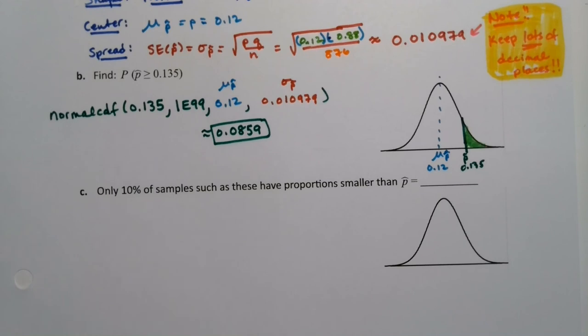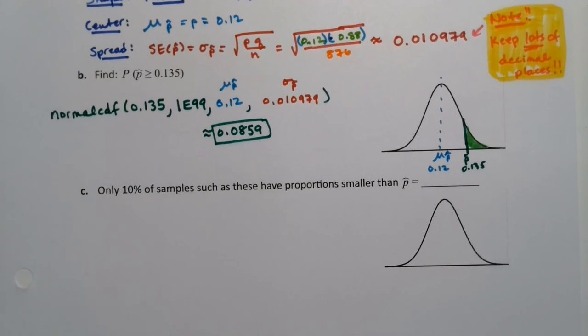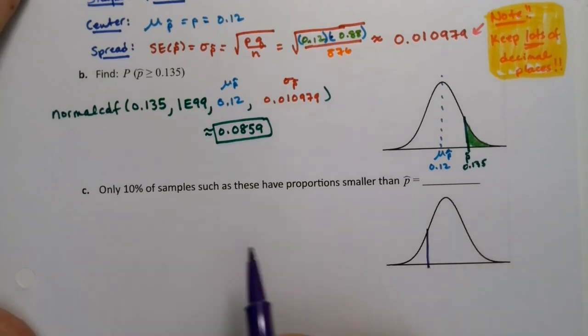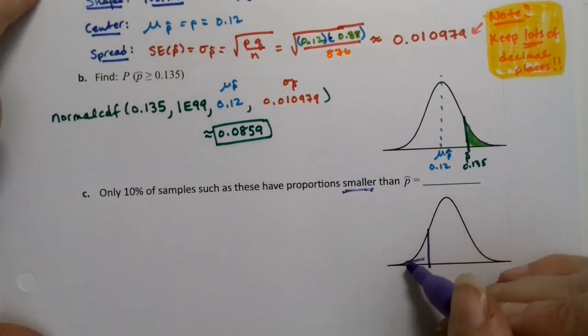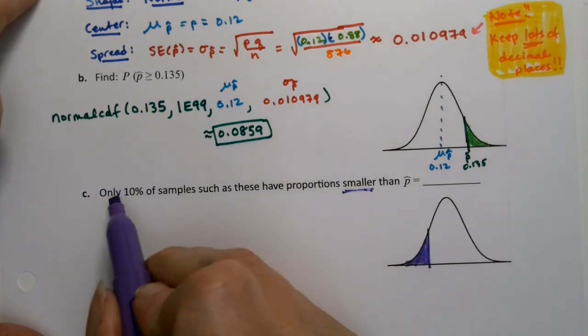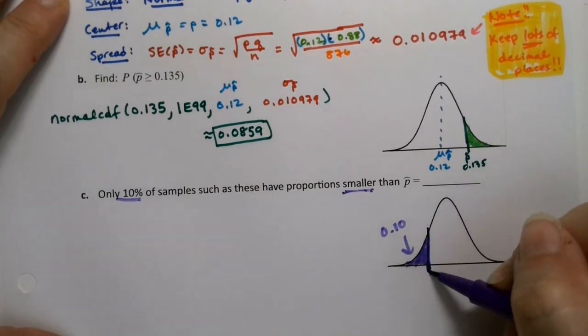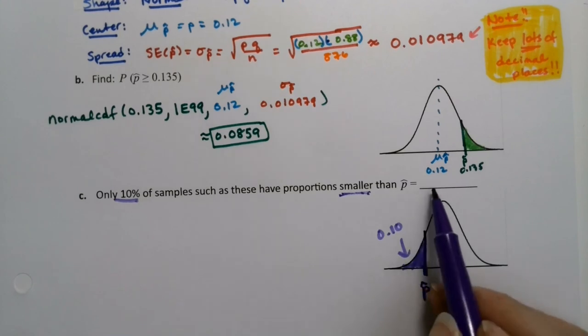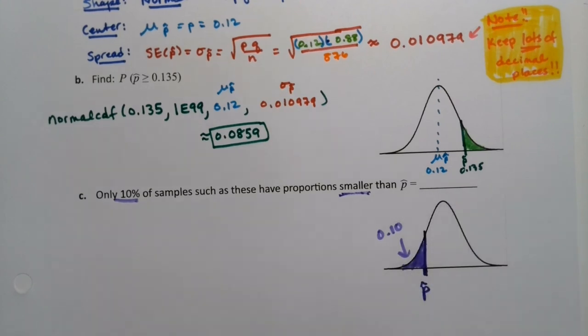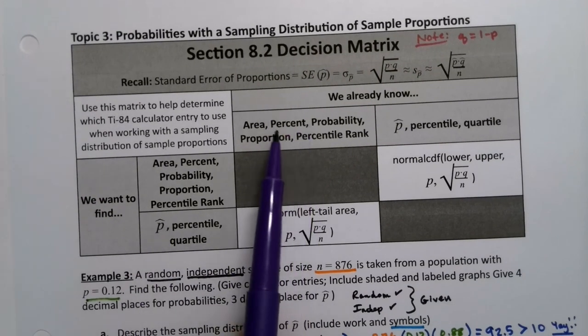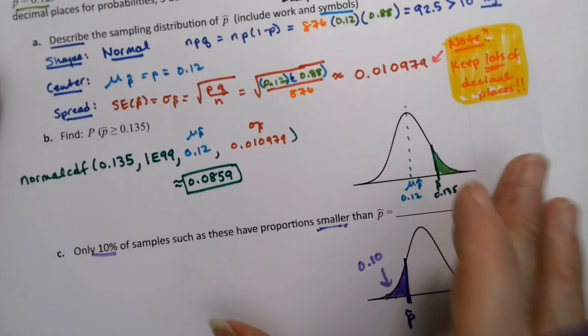Now, 10% of samples would have proportions or samples such as these would have proportions smaller than p-hat equals what? Okay, 10%. So what we're looking for is the bottom 10%. So 10% of samples would have smaller than this, so I'm going to shade to the left. And I know that this area to the left that I'm shading is 10%. And what they're asking is, 10% is smaller than what p-hat value? P-hat equals what? Okay, so let's go to the decision matrix. I want to find a p-hat, I already know a percent—the percent I know is 10%—so I'm looking for inverse norm.